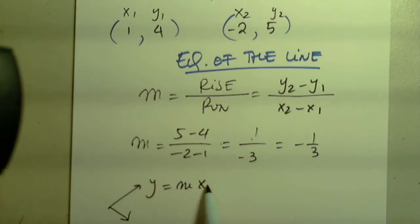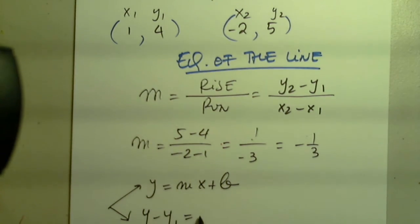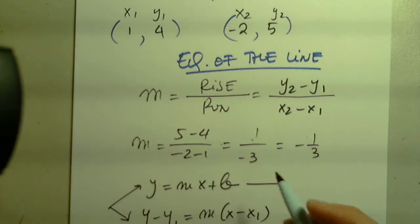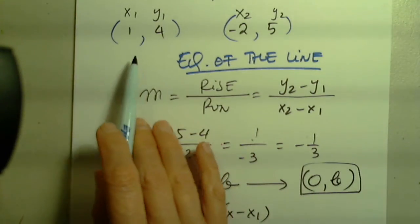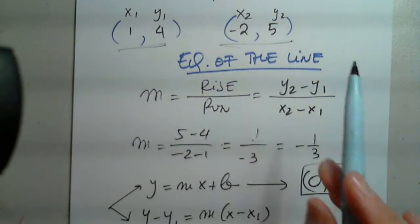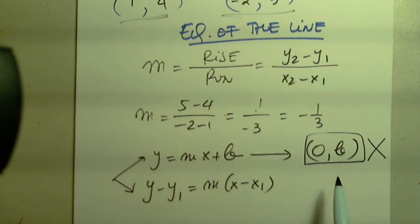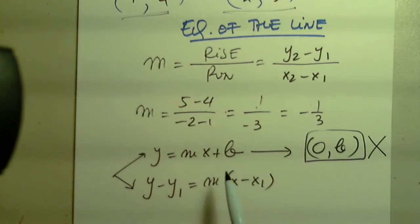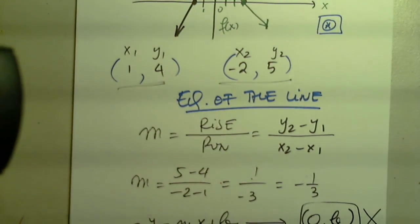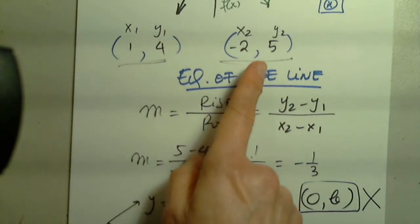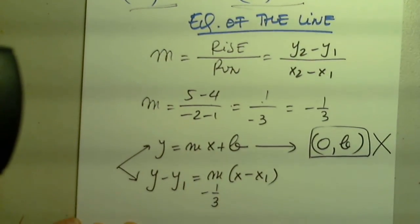So now remember we have two options: either y equals mx plus b, or y minus y1 equals the slope times x minus x1. But we use this when we have an ordered pair like this. We don't have b, so there is no need to use this one. This is the y-intercept. So the slope will be negative one third. Which point do you want to use? It doesn't matter because we used both points to determine the slope. It doesn't matter if you use this and I use that, we'll get the same equation. So which point would you like to use?